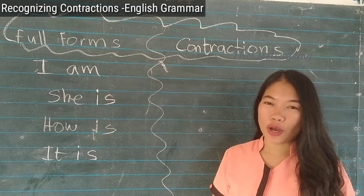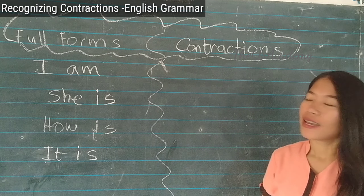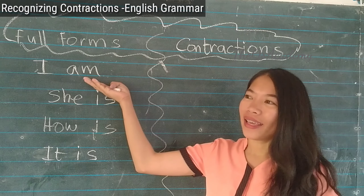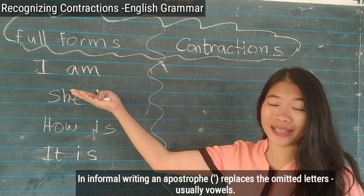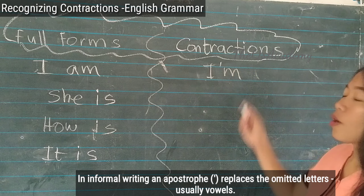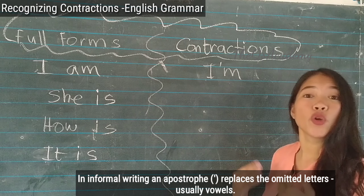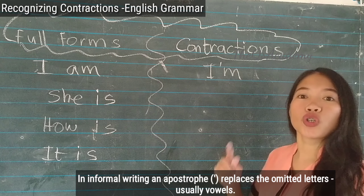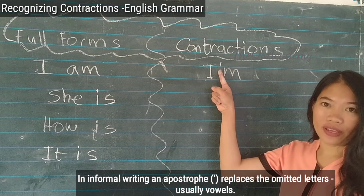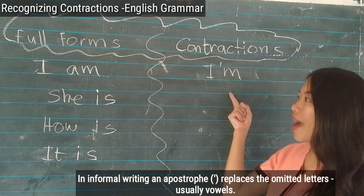These are examples of full forms and contractions. Take 'I am' — what is the contraction of the phrase 'I am'? The contraction is 'I'm'. Take note that when you omit a letter, you should replace it with an apostrophe. So 'I am' becomes 'I'm'.